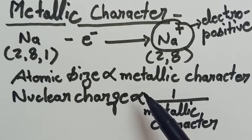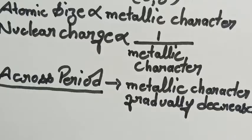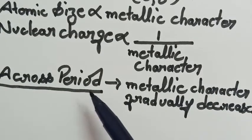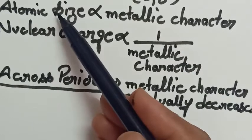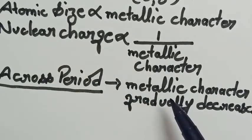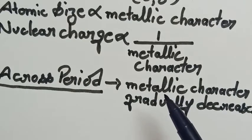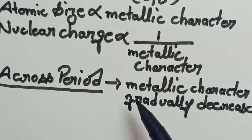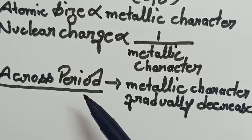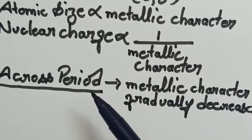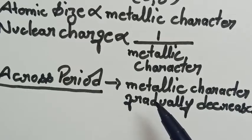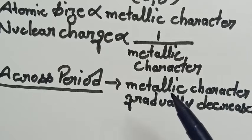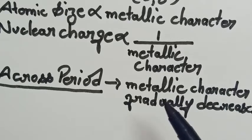In metallic characteristic across a period, while moving across a period, as we know, atomic size decreases, that is why metallic characteristic gradually decreases. As one moves across a period from left to right, the nuclear charge increases and atomic size decreases. Hence, the element cannot lose electrons easily and loses the metallic characteristic as well.